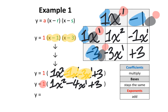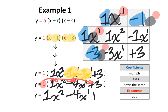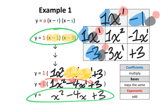Since we have a number in front of the brackets, we use the distributive property — everything inside gets multiplied by 1. When you multiply anything by 1, it stays exactly the same. So we have 1x squared, negative 4x to the power of 1, and positive 3. To clean up the equation, we remove the coefficient of 1 and the exponent of 1. In conclusion, we've just converted factored form to standard form.